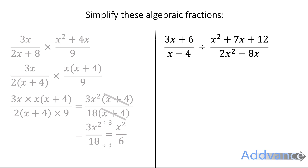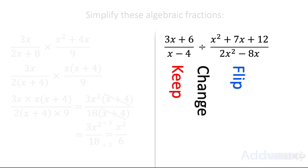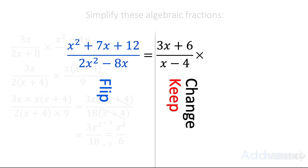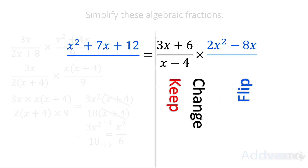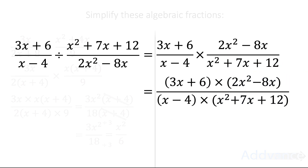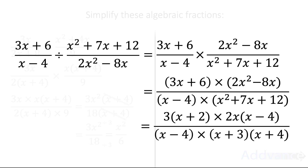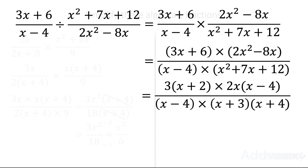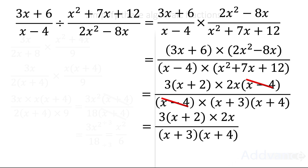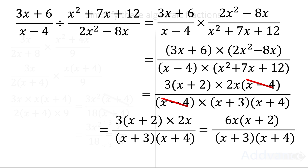Now let's look at dividing fractions. When you're dividing fractions, remember: keep, change, flip. You keep the first fraction the same, change the divide to times, and flip the last fraction upside down — the bottom becomes the top and the top becomes the bottom. We multiply the top and the bottom, then factorise. The x minus 4 and x minus 4 cancel as common factors. We're left with 6x times x plus 2 over x plus 3 times x plus 4, and that is the final answer.